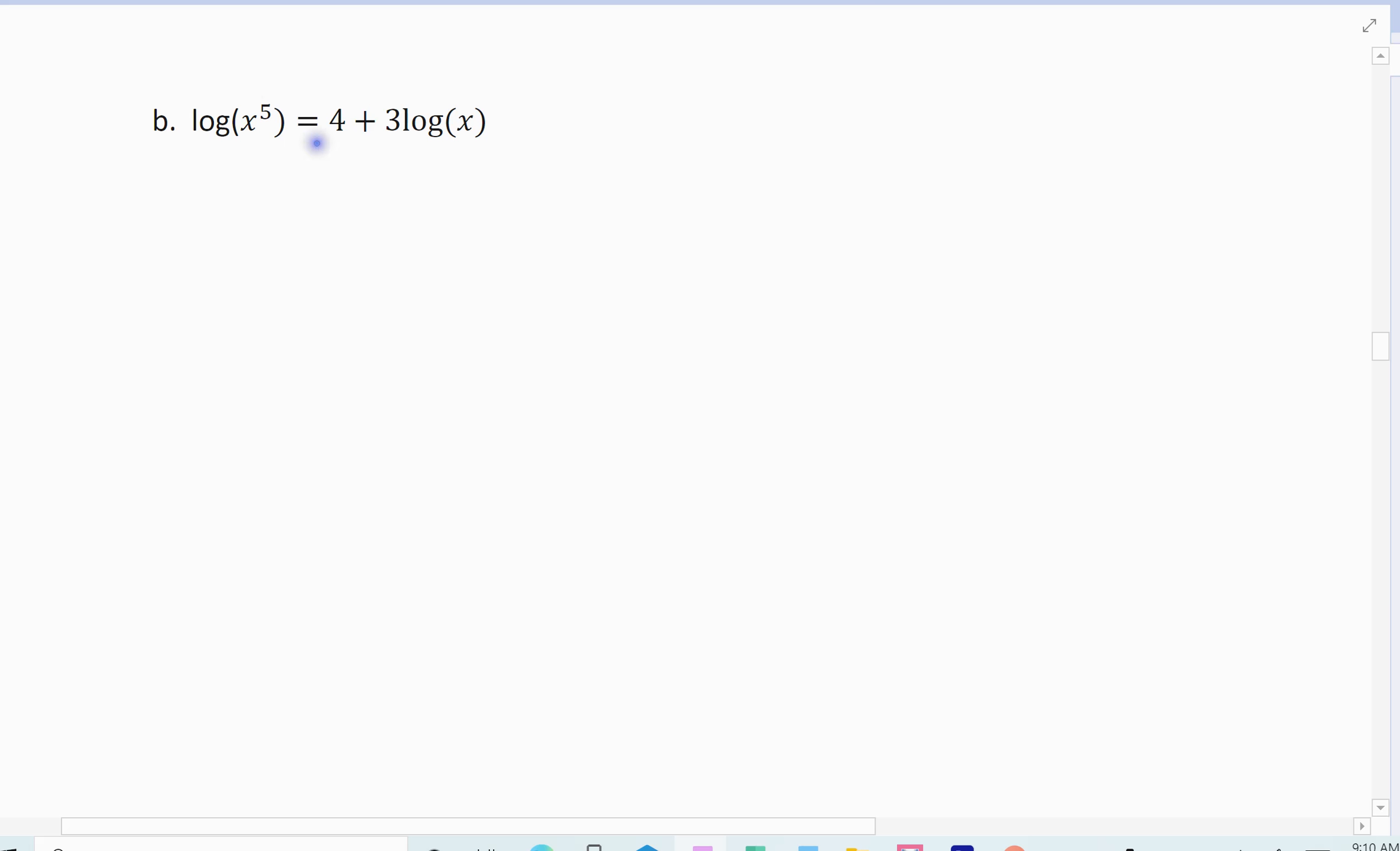Alright, so this one I have to do a little bit of work. Alright, so I've got a couple of logarithms. I've got a constant. And so what I need to do is I need to get one logarithm on one side. Alright, so first thing I'm going to do is I'm going to move the log term to the other side. So I'm going to subtract the negative 3 log of x and move it to the other side. And so I've got log of x to the 5th minus 3 log of x equals 4. Now I'm going to move my 3 in.